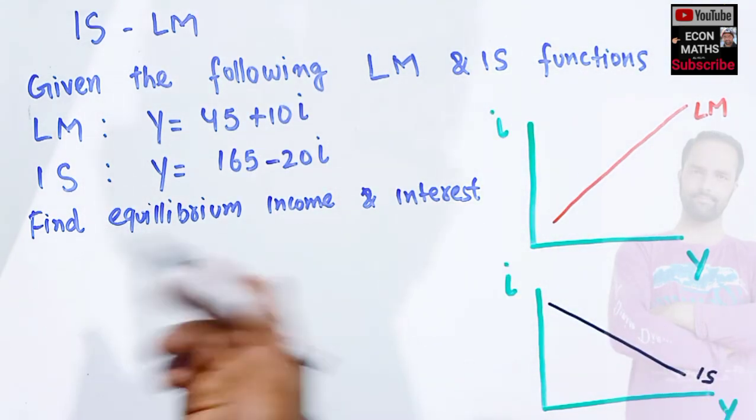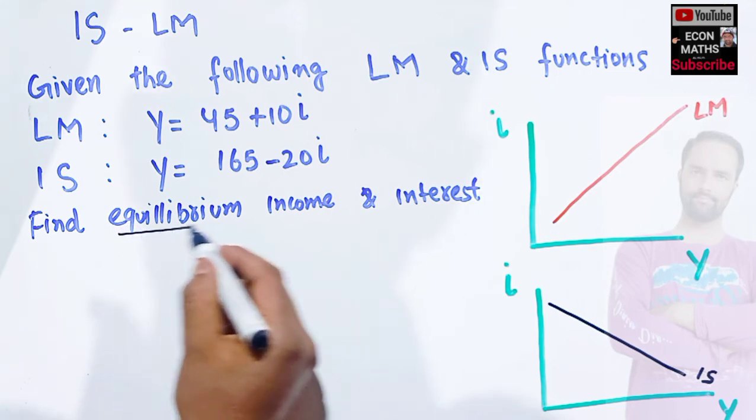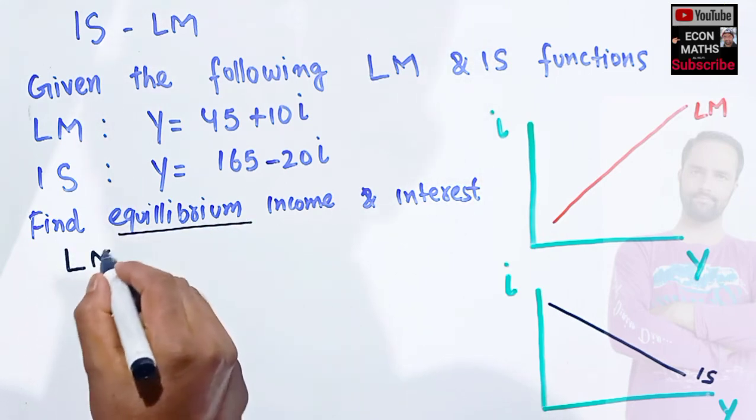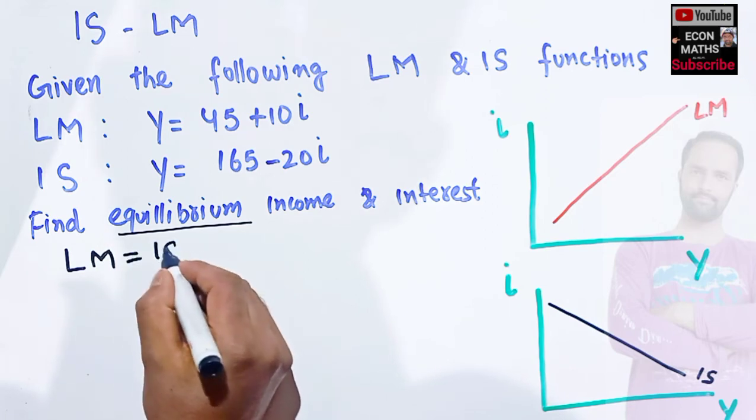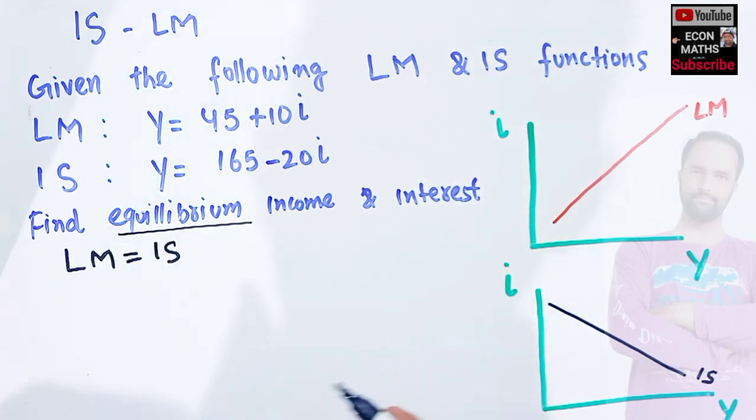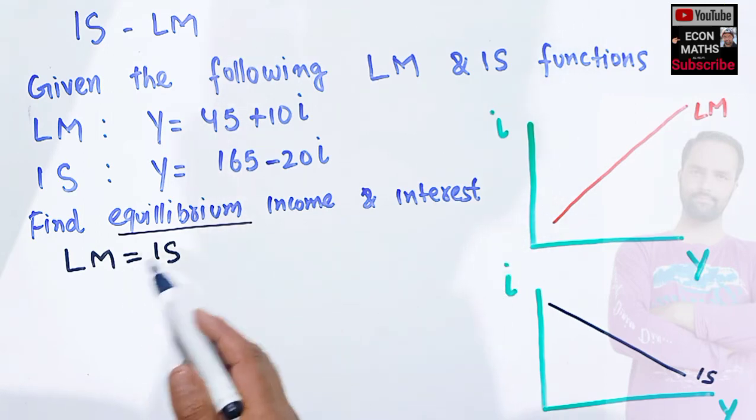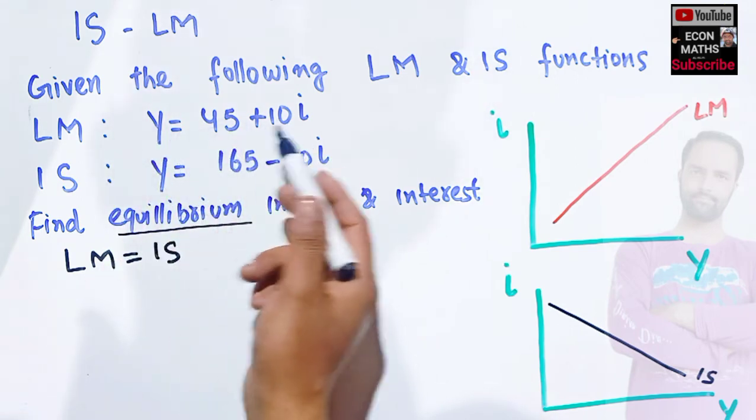Now equilibrium requires that LM should be equal to IS. That means to find the equilibrium level of income and interest, LM should be equal to IS. Here LM function is this,